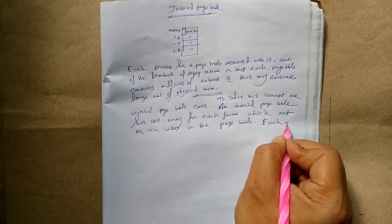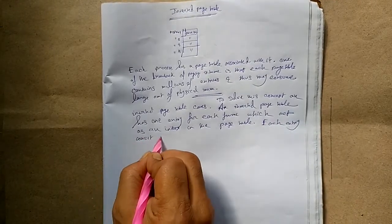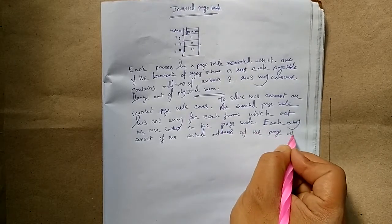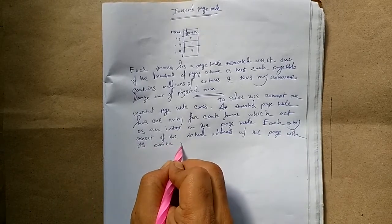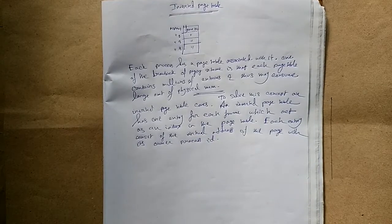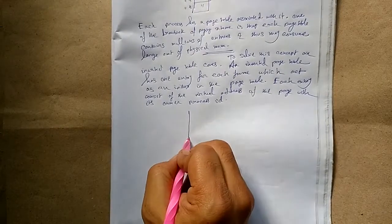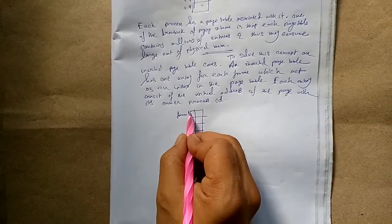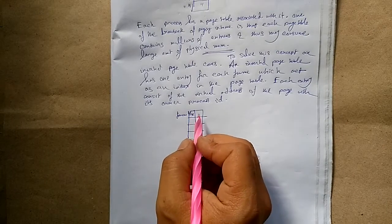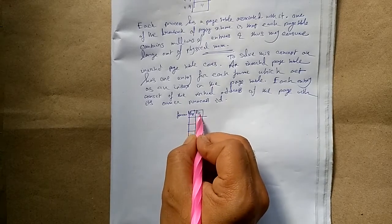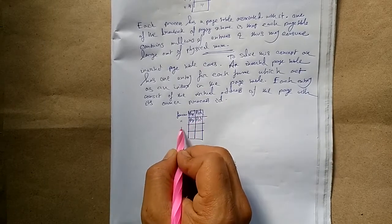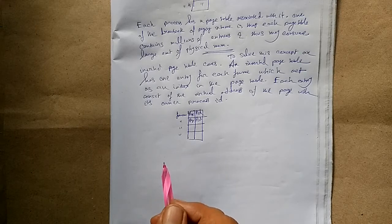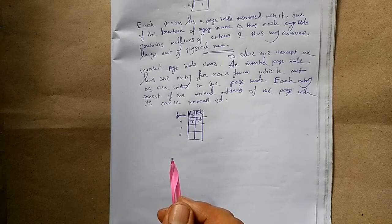Each entry in the inverted page table consists of the virtual address of the page along with its owner process ID. So the frame number acts as the index holding the corresponding page number and its owner process ID. This reduces the consumption of large amounts of physical memory.